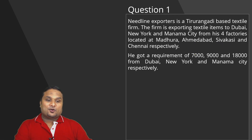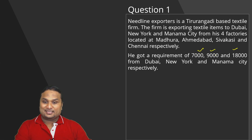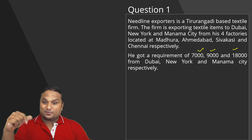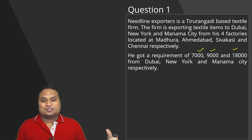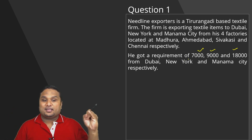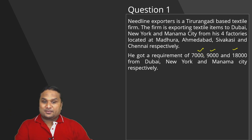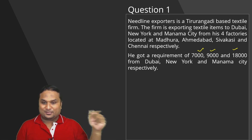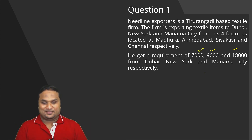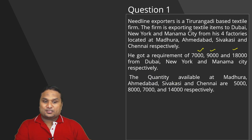He received a requirement — that is, the demand — of 7,000 units from Dubai, 9,000 units from New York, and 18,000 units from Manama City respectively. These units could be kilograms or any other measurement. So Dubai demands 7,000 units, New York requires 9,000 units, and Manama City in Bahrain requires 18,000 units.